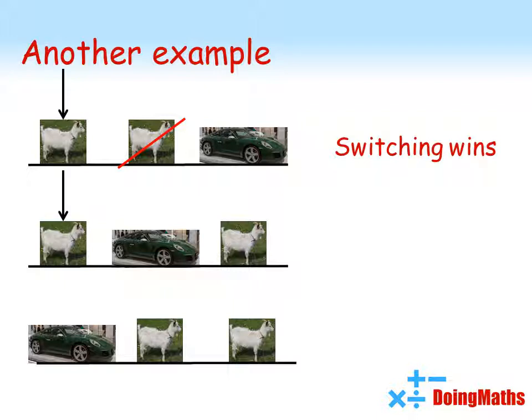In example two, the other goat is behind door three, which is then opened. So, switching gives you door two. Again, you win a car.